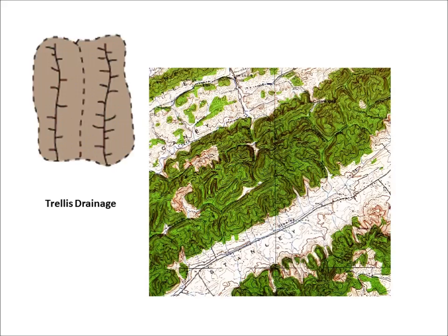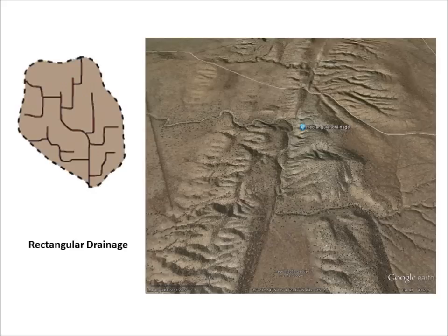In trellis drainage, tributaries join the main stream at nearly right angles. The rectangular drainage pattern is found in regions that have undergone faulting. Streams follow the path of least resistance and are concentrated where the rock is weakest. The movement of the surface due to faulting offsets the direction of the stream; as a result, tributary streams make sharp bends and enter the main stream at high angles.